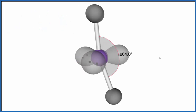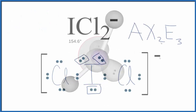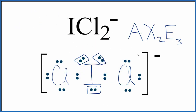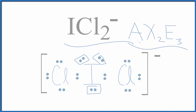Let's go back to the Lewis structure. So to recap, we used the AXE notation to figure out that we have AX₂E₃, which is a linear molecular geometry, where we have 2 atoms bonded to that central atom and 3 lone pairs. This is Dr. B with the molecular geometry, bond angles, and electron geometry for ICl₂⁻. Thanks for watching.